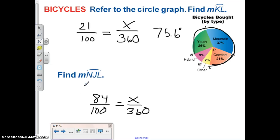And we can say that 84 is to 100 as X is to 360, and find that that measure of that angle is 302 degrees, actually 302.4, which looks about right. If the whole circle is 360, that makes sense to me.